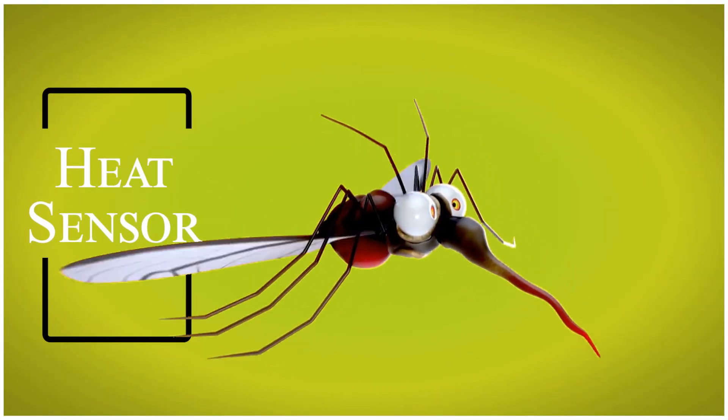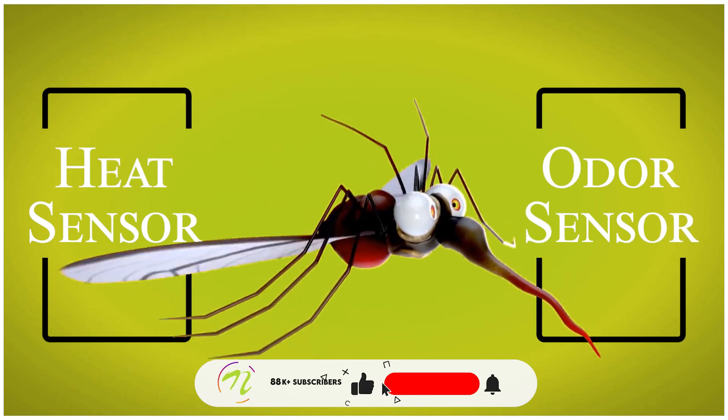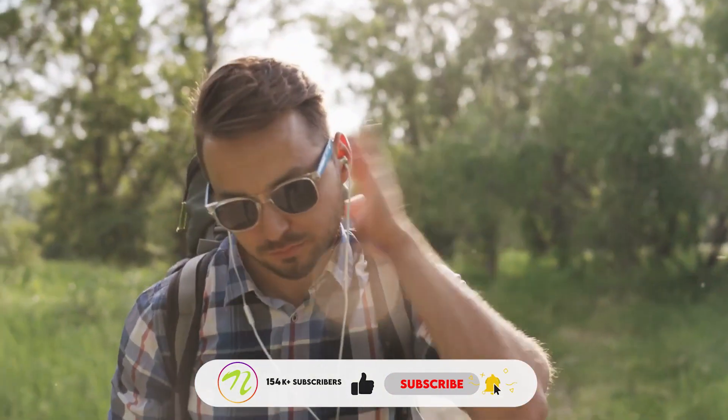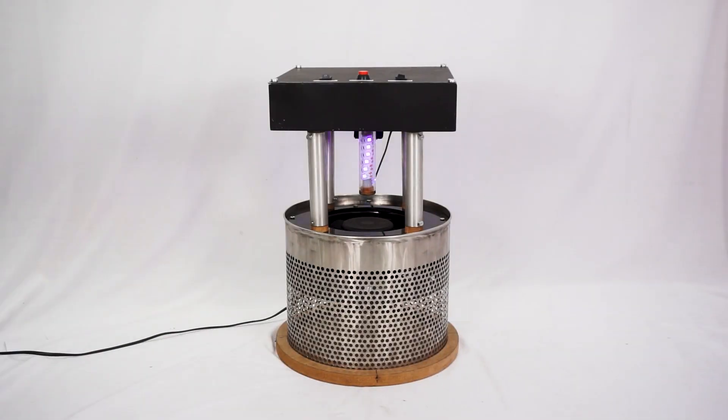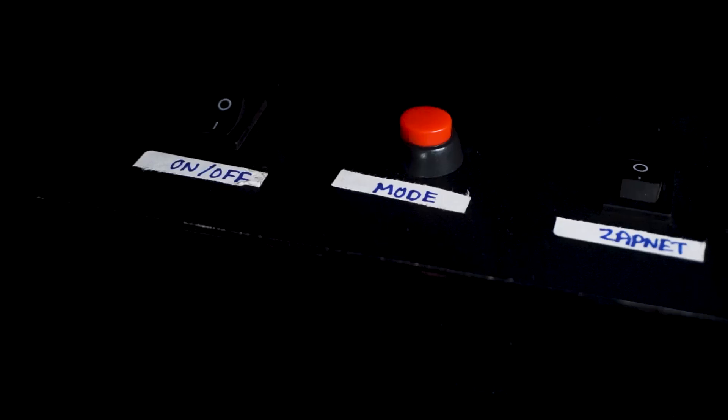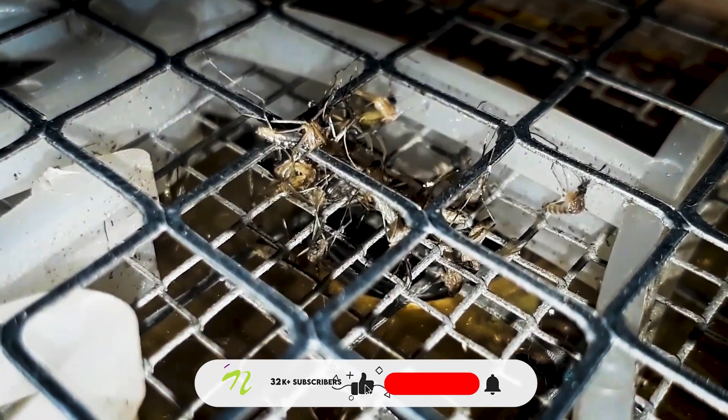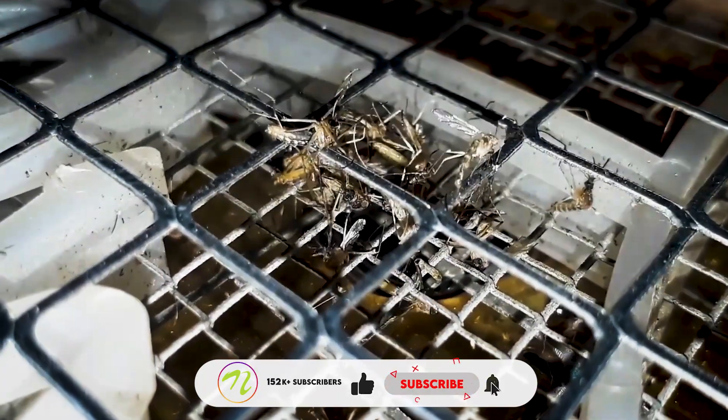Then, they use body heat and odor sensors to get close enough to a human to bite it. Well, this smart machine makes use of a mosquito's own sensors to lure it and kill it very efficiently.